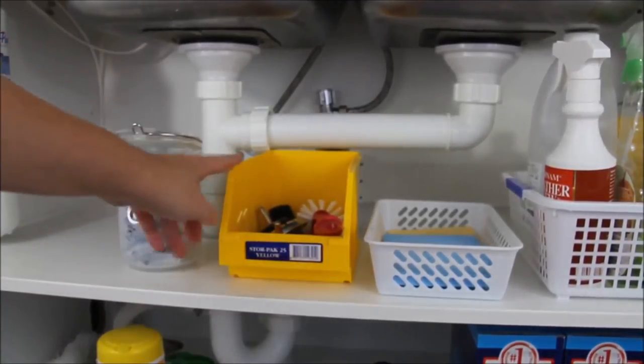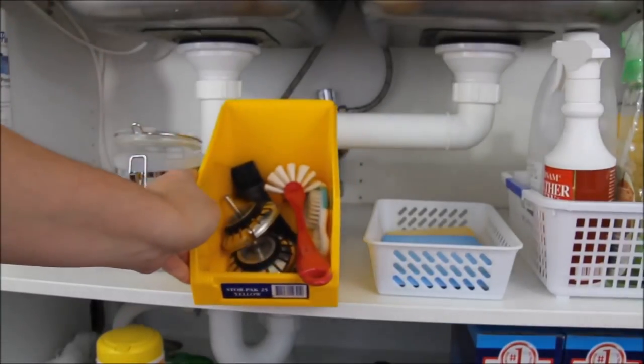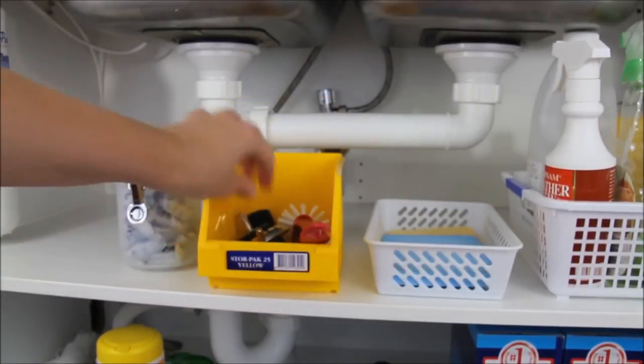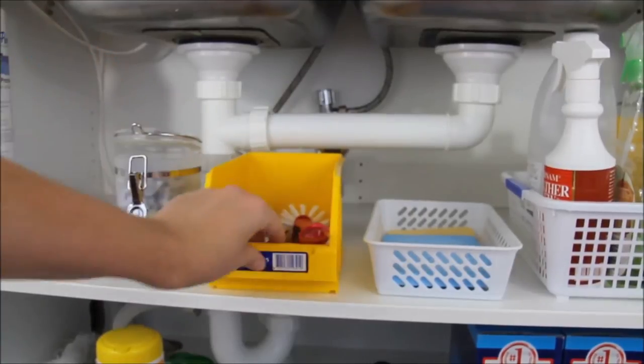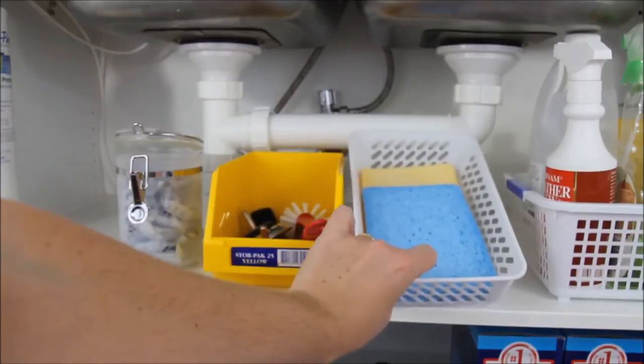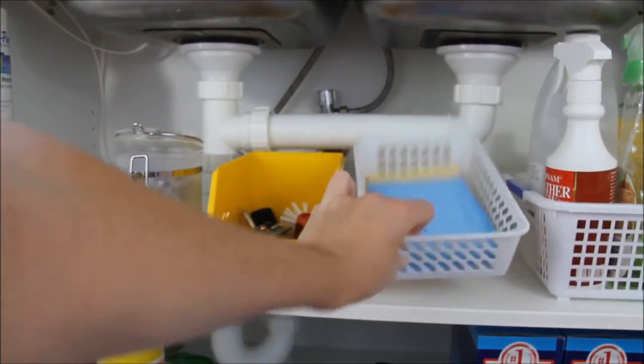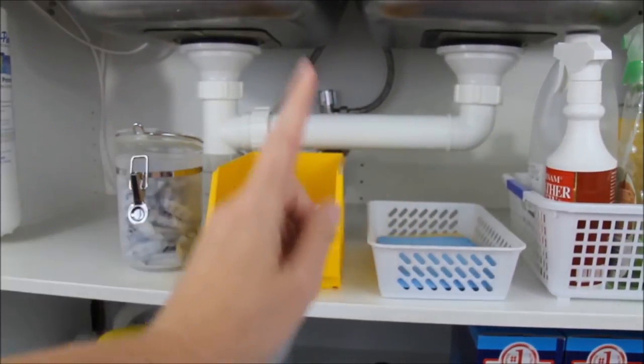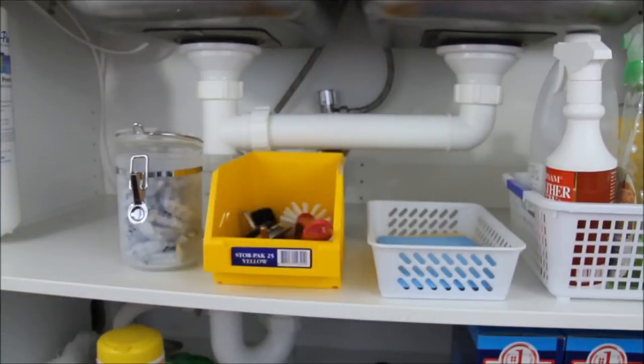Now over here in this basket are just my washing up brushes and the sink plugs. Okay, and over here I've got a couple of sponges. So I've just put them into their own little basket and I do need to get some more sponges, but that's all that I had for the moment.